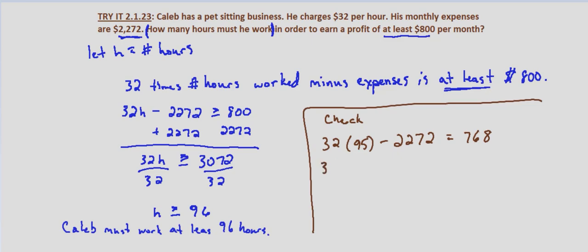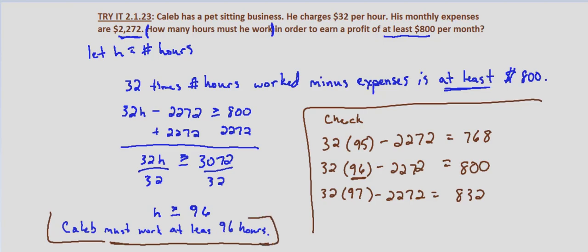32 times 96 minus 2,272 equals 800, which is at least 800. And just for good measure, 32 times 97 minus 2,272 equals 832. So the first amount that is at least $800 is 96 hours. This verifies Caleb must work at least 96 hours to make at least $800 profit.